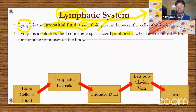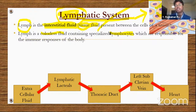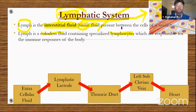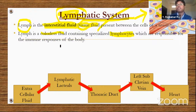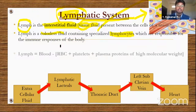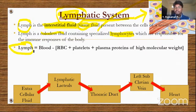Lymph is a colorless fluid containing specialized lymphocytes responsible for immune responses of the body. The name 'lymph' is given because it contains lymphocytes — a type of WBC. These lymphocytes help the immune system fight against foreign pathogens: bacteria, viruses, and other pathogens are trapped and killed by lymphocytes.